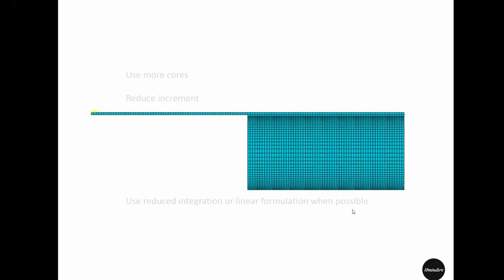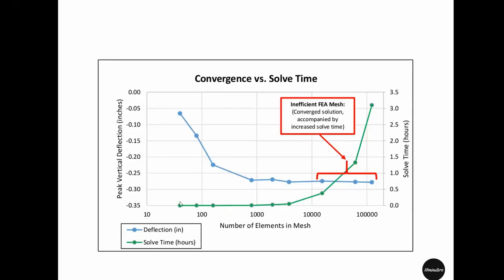As you increase the number of elements, simulation time increases — slowly at first, then exponentially as the element count grows. Be careful not to reduce element count too much, because mesh convergence requires that you find a point where increasing the number of elements no longer changes the result significantly. Find a sweet spot where you use a sufficient number of elements but the solve time remains reasonable.